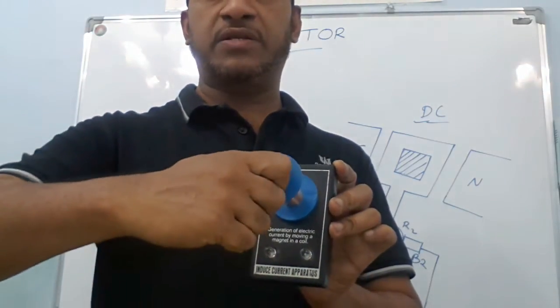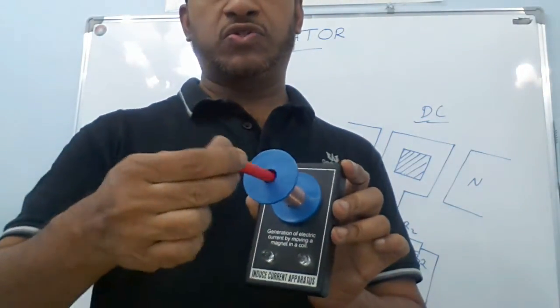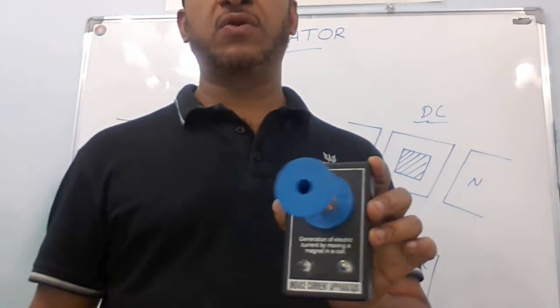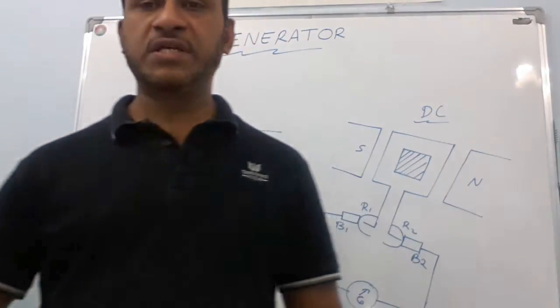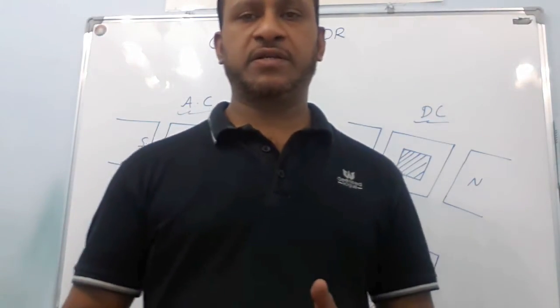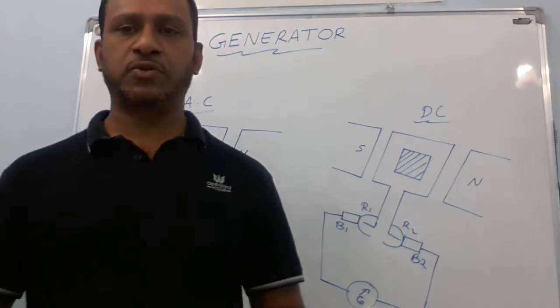When I move the magnet fast, it induces a current in the coil, and by using that current the LED is glowing. If I move the magnet slowly, it won't induce a current. So, if you move the magnet very fast, then only it induces a current in the coil. Whenever there is a change in magnetic field associated with a conductor, it will induce a current in it. That is the basic principle of electromagnetic induction.